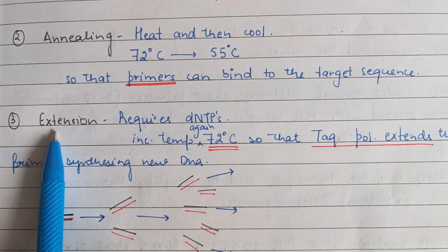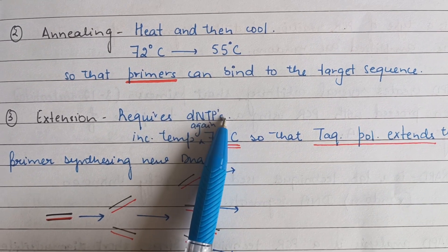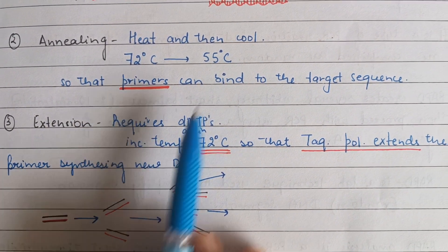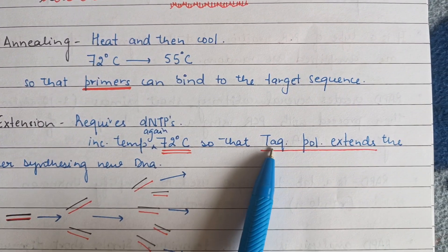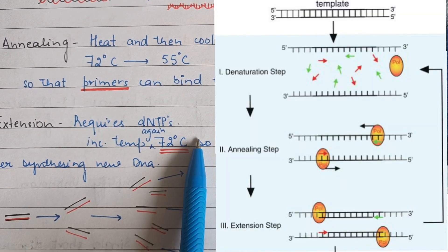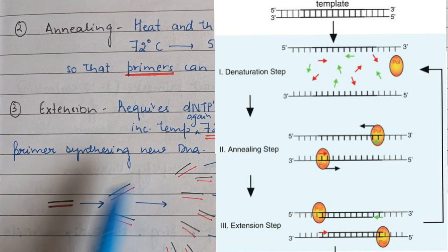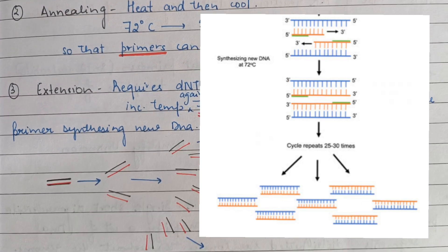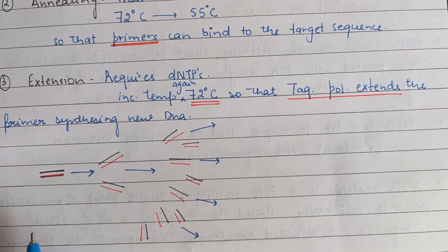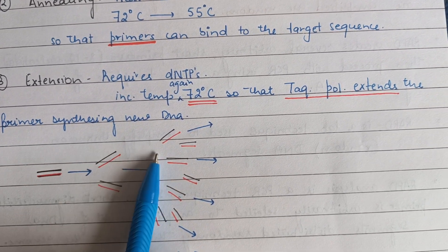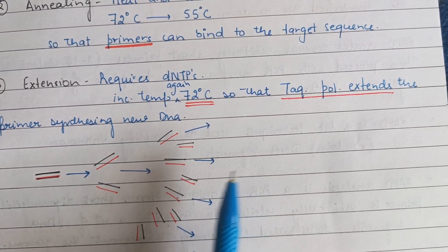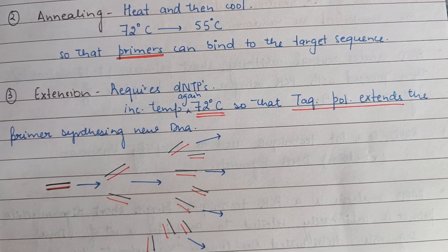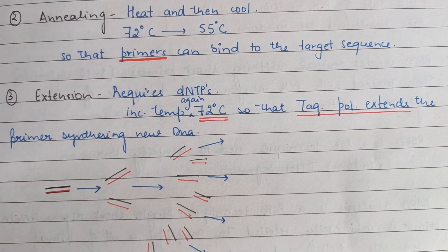The next step is extension. Here we use the dNTPs already added in the tubes for further extension or polymerization using Taq polymerase. We raise the temperature from 55 to 72 degrees Celsius so that Taq polymerase extends the primers, synthesizing new DNA. This is how from one DNA we get two, then four, then eight, then sixteen copies. Around 15 to 25 cycles are repeated in the thermal cycler, and this is how PCR amplifies a random sequence of polymorphic DNA.